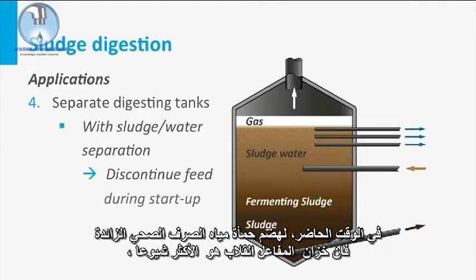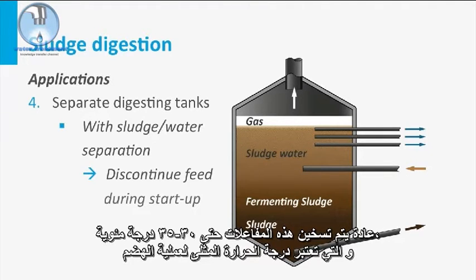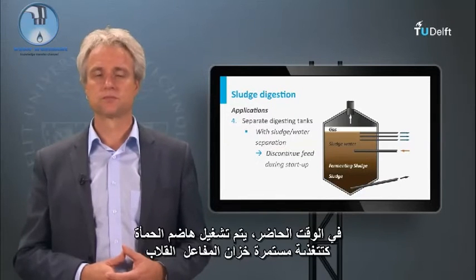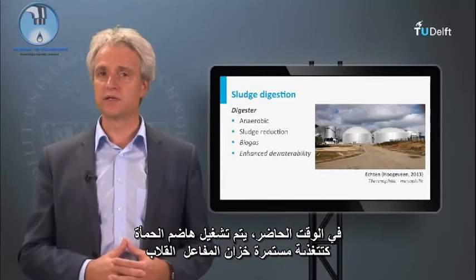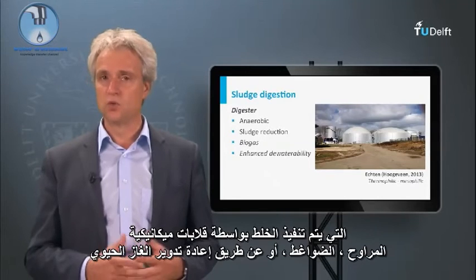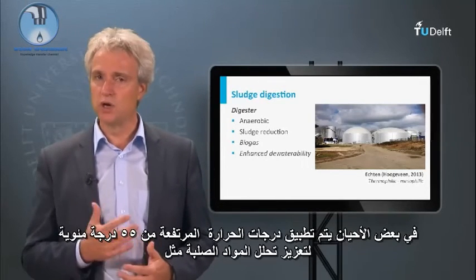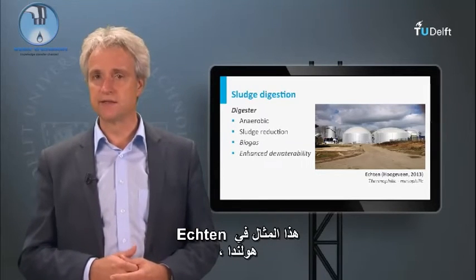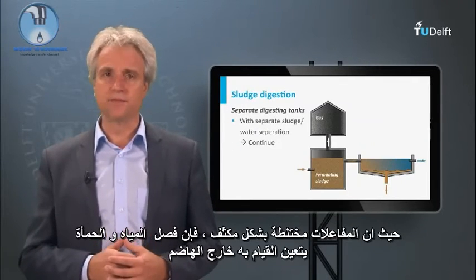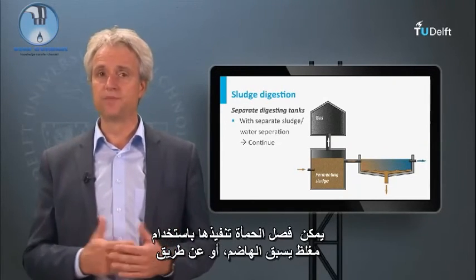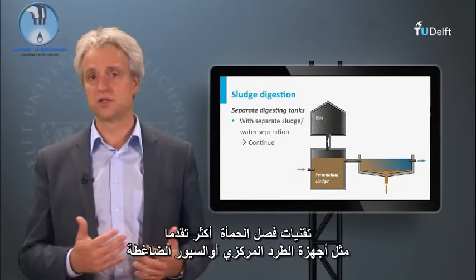At present, for the digestion of excess sewage sludge, a stirred tank reactor is most commonly applied. These reactors are generally heated to 30–35 degrees Celsius, considered an optimum temperature for digestion. Initially, feeding was performed discontinuously, allowing the sludge to settle after which sludge water was withdrawn. At present, sludge digesters are operated as continually fed stirred tank reactors, where mixing is performed with mechanical stirrers, impellers, or recirculated biogas. Sometimes high temperatures of 55 degrees Celsius are applied to enhance solids degradation, such as in Echten, the Netherlands. Since reactors are intensively mixed, sludge–water separation is sometimes performed outside the digester, using a post-digestion thickener or more advanced techniques such as centrifuges or belt presses.